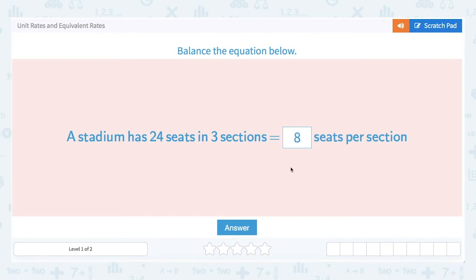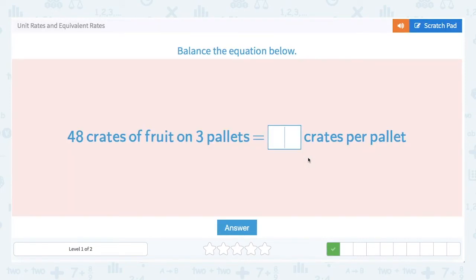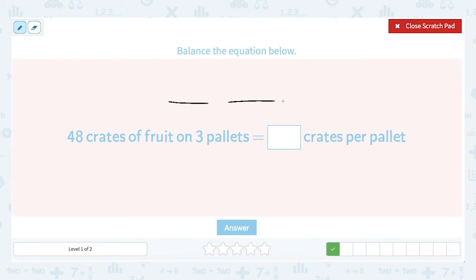Let's go ahead and put that answer in and it's correct. 48 crates of fruit on three pallets. So a pallet, if you don't know what that is, is a flat wooden structure that can carry loads of things, boxes of things. In this case, boxes or crates of fruit. So I'm going to make flat lines to represent my three pallets.